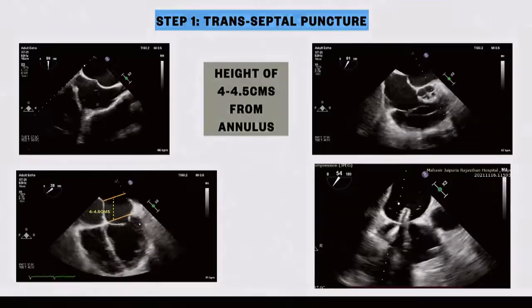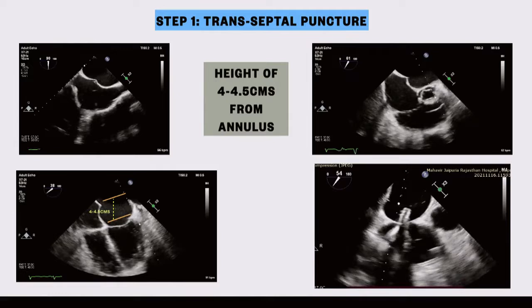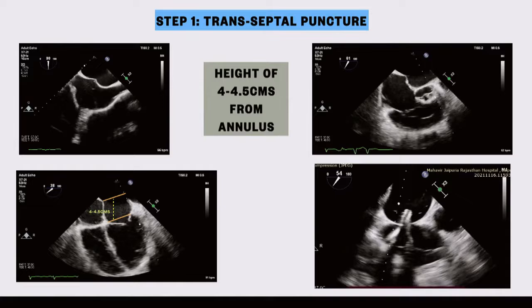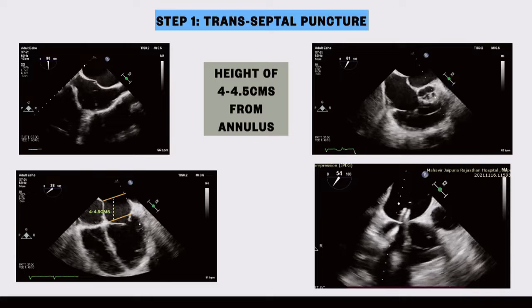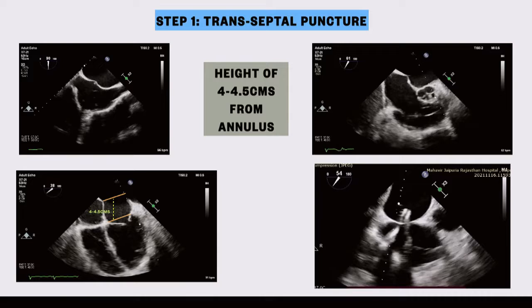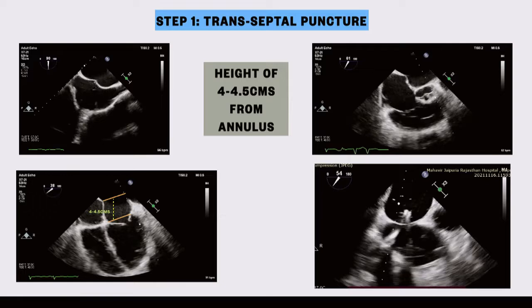Step one: transeptal puncture — very important. Height should be around 4 to 4.5 cm above the mitral valve. For functional MR, sometimes 3.5 to 4 cm is acceptable. The bicommissural view shows superior-inferior position, and the posterior short axis view confirms posterior orientation. To gain height, go clockwise with the transeptal system — going posterior moves away from the mitral valve and achieves height. The short axis TEE view is important as you advance the guide catheter into the left atrium.